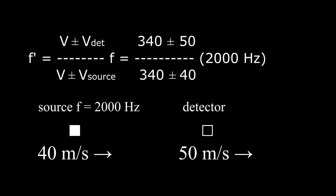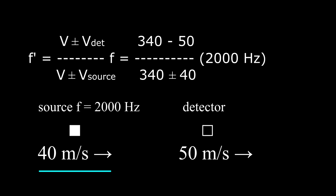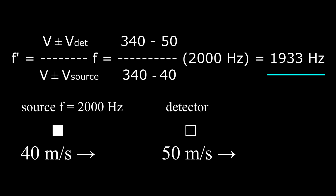In this fourth example, we have the last possible combination of velocities, this time with the source chasing the detector. The detector is trying to move away, decreasing f prime, so we make the ratio smaller by choosing the minus sign in the numerator. The source is trying to move toward the detector and increase the detected frequency f prime, so we choose the minus sign in the denominator. And the calculation gives 1933 hertz.